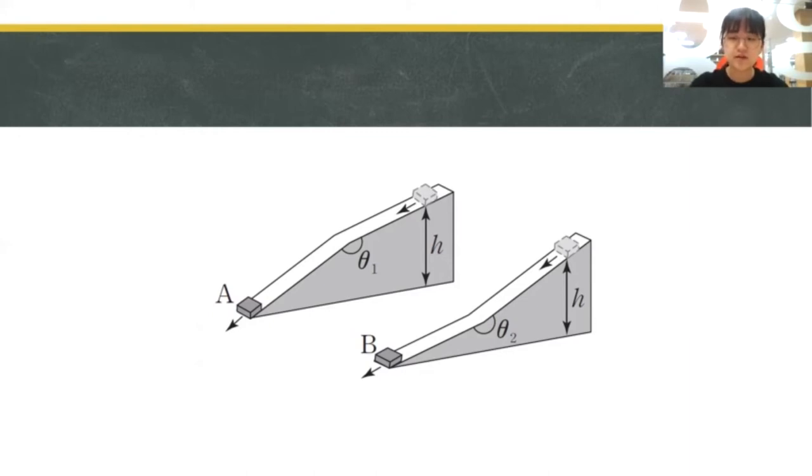If two objects start on a different slope, the one to arrive faster would be the object with a bigger initial acceleration. That is, if the slope's initial gradient is steeper, the object would arrive faster.